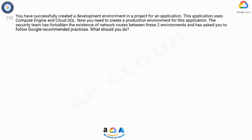Question 110. You have successfully created a development environment in a project for an application. This application uses Compute Engine and Cloud SQL. Now you need to create a production environment for this application. The security team has forbidden the existence of network routes between these two environments and has asked you to follow Google-recommended practices. What should you do?